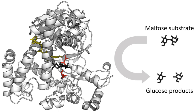The chemical groups carried include: the hydride ion, carried by NAD or NADP+; the phosphate group, carried by adenosine triphosphate; the acetyl group, carried by coenzyme A; formyl, methanol, or methyl groups, carried by folic acid; and the methyl group, carried by S-adenosylmethionine. Since coenzymes are chemically changed as a consequence of enzyme action, it is useful to consider coenzymes to be a special class of substrates, or second substrates, which are common to many different enzymes. For example, about 1,000 enzymes are known to use the coenzyme NADH.